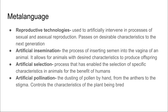Artificial insemination is the process of inserting semen into the vagina of an animal, and this allows these animals to produce offspring with desired characteristics. Artificial selection is a process of selecting characteristics in animals for the benefits of humans. And artificial pollination is the dusting of pollen by hand or machinery from the anther to the stigma, and this controls the characteristics of the plants being bred.